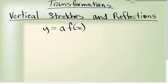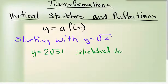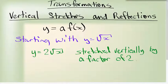So looking again at the functions, let's look at the equations. If I start with y equals the square root of x, I can stretch it vertically by putting a 2 in front. So what that means is it is stretched vertically by a factor of 2. Essentially, my function got twice as tall.